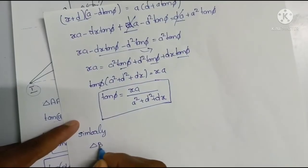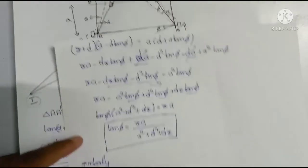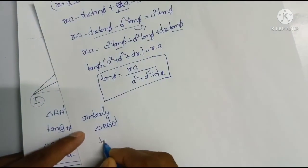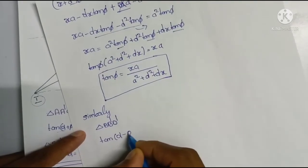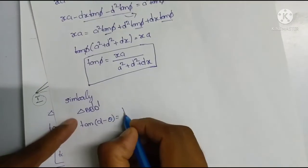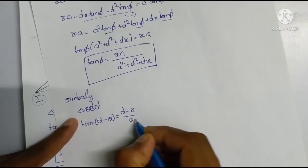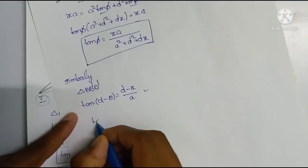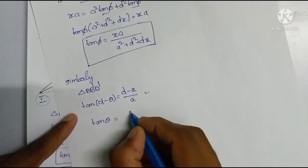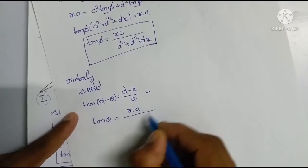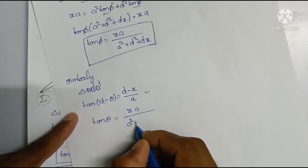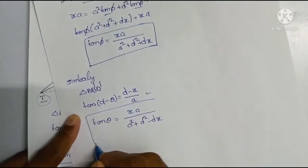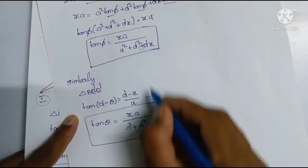Similarly, for triangle B, B dash, D dash, the first consideration gives: tan(α minus θ) equals (D minus X) by A. This is the same approach. The final result is: tan(θ) equals X by A, times (A squared plus D squared minus D·x).